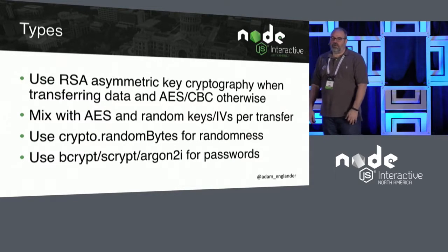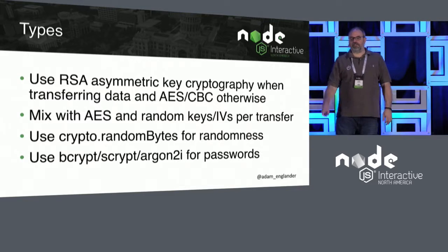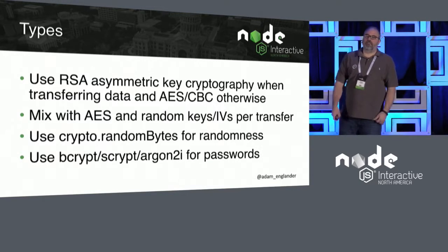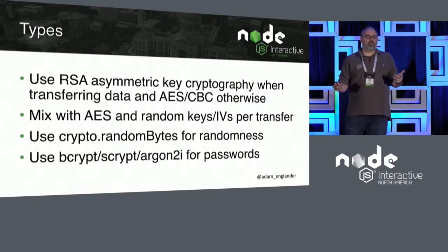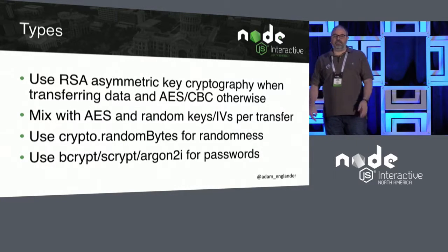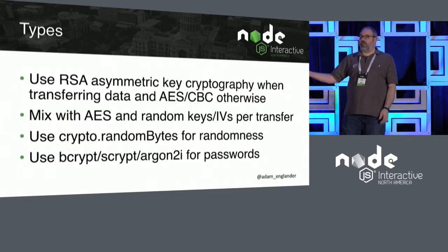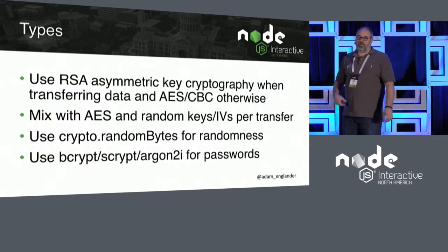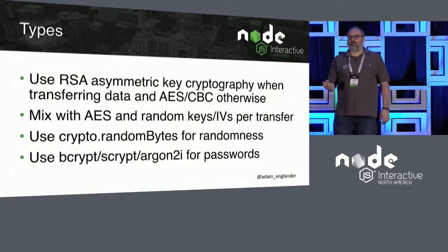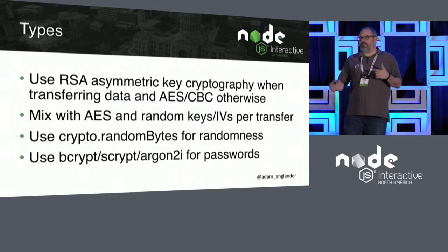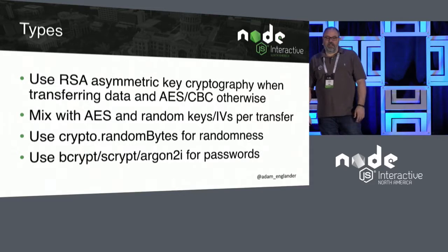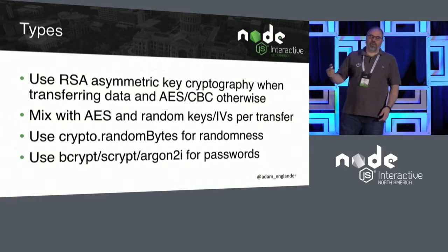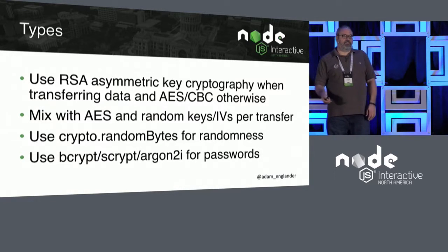Recommendations: use RSA asymmetric key cryptography when transferring data. If you're moving it back and forth, you don't want to trust other people with your sensitive keys, and you don't want to have the secret of someone else who accesses their data on your system if you don't have to. Mix AES with random keys and IVs for transfer — you can encrypt with RSA using AES and random keys and IVs; they can crack it once, but probably not again. Always use crypto random bytes for randomness. Do not use anything else for generating random values — it is not cryptographically secure.